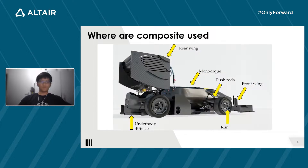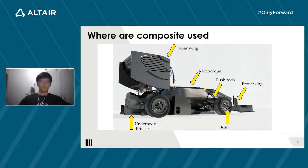Looking into the Formula Student car — where is composite used? In the Formula Student race car, up to 60% to 70% is made out of composites: a mixture of carbon-reinforced plastic, glass-reinforced plastic, and aramid-reinforced plastic. In the picture, you can see the front wing, rim, pushrod, rear wing, underbody diffuser, and the monocoque are all made out of composites.